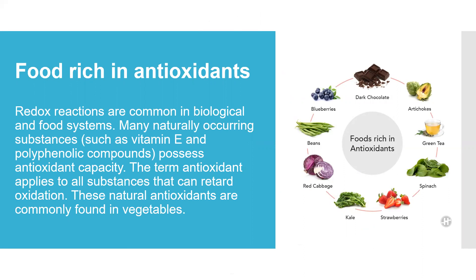Redox reactions are very common in biological and food systems. Many naturally occurring substances such as vitamin E and polyphenolic compounds have antioxidant capacity. The term antioxidant applies to all substances that can retard oxidation. These natural antioxidants are commonly found in vegetables — for example, artichokes, green tea, spinach, strawberries, and some other vegetables have rich antioxidant content.